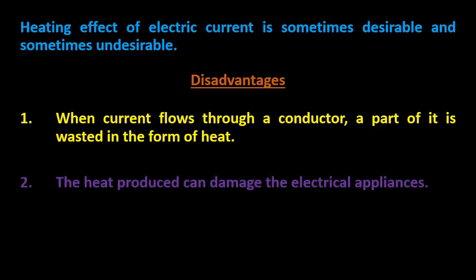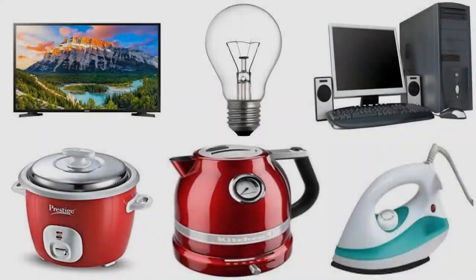The second disadvantage is that heat produced can damage electrical appliances. If the heat produced in an appliance is very large, the appliance may get damaged. For example, using a mobile phone for a very long time causes it to heat up, and excessive heat can damage it. Similarly, watching TV for too long heats it up, and using a bulb for a long time also produces heat — making it too hot to touch.